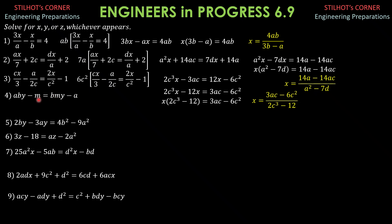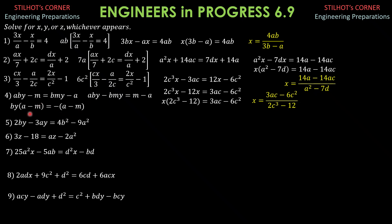Here, transpose BMY to the left and negative M to the right. This becomes ABY minus BMY equals M minus A. Factor out BY: BY times the quantity (A minus M) equals negative of the quantity (A minus M). We can cancel out (A minus M), provided M is not equal to A — that is, we are canceling a factor that is not zero. So BY equals negative 1. Divide everything by B. Therefore, Y is negative 1 over B.